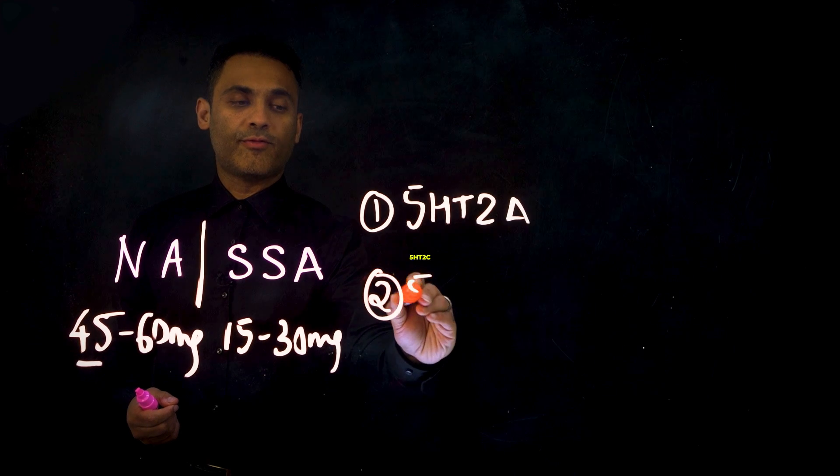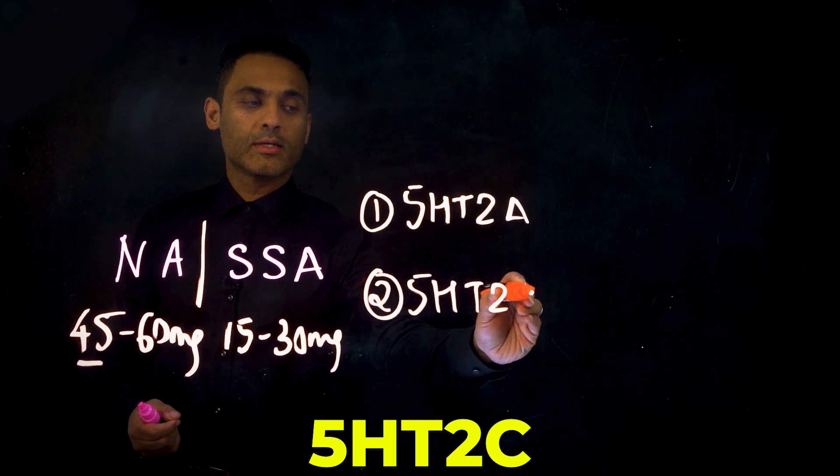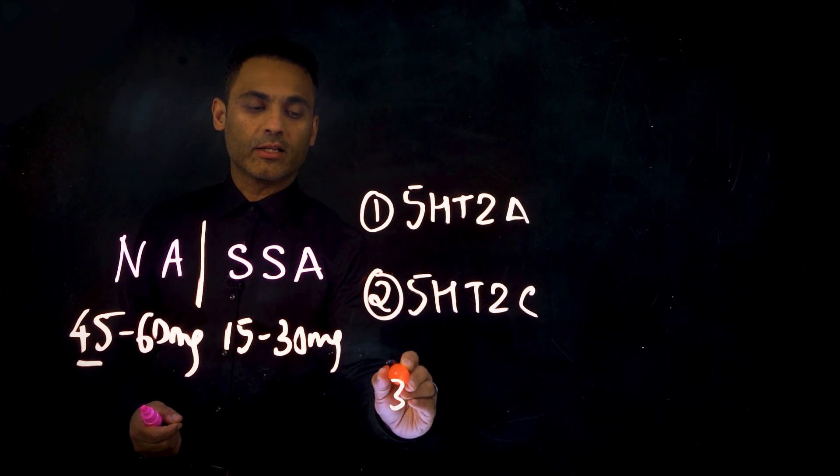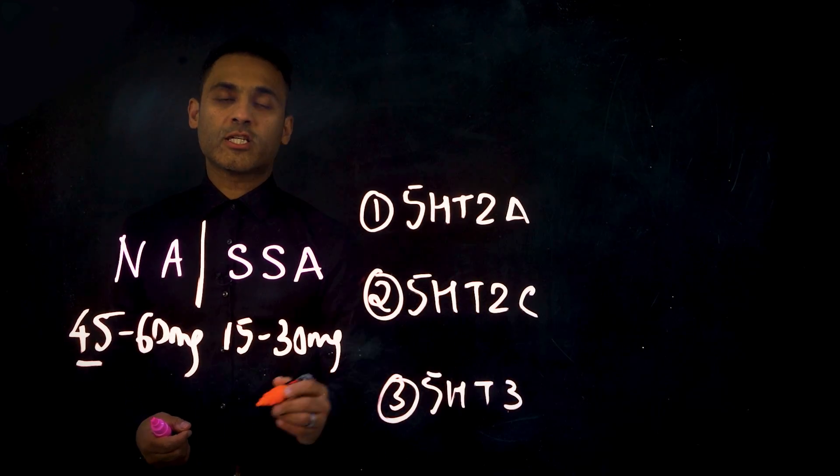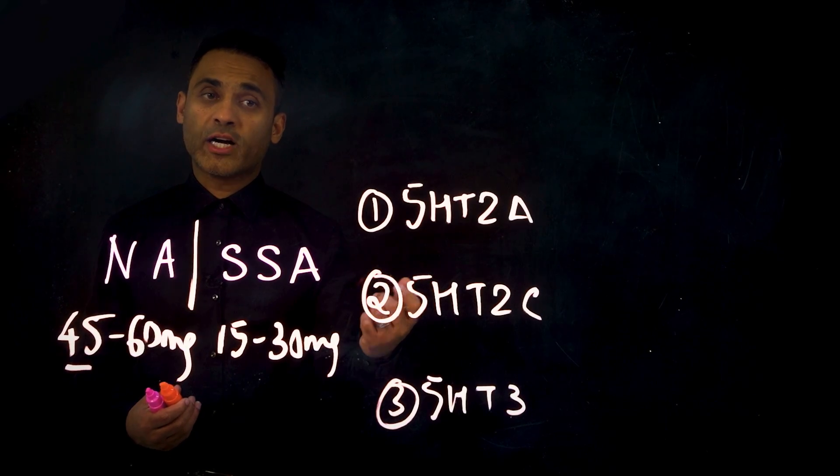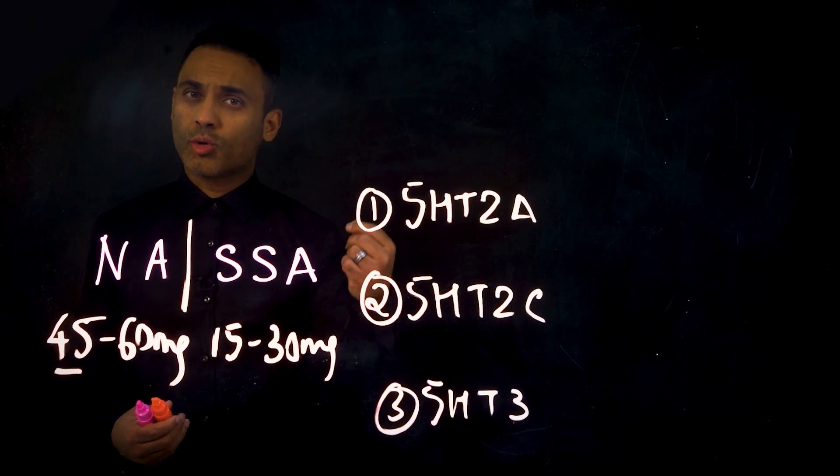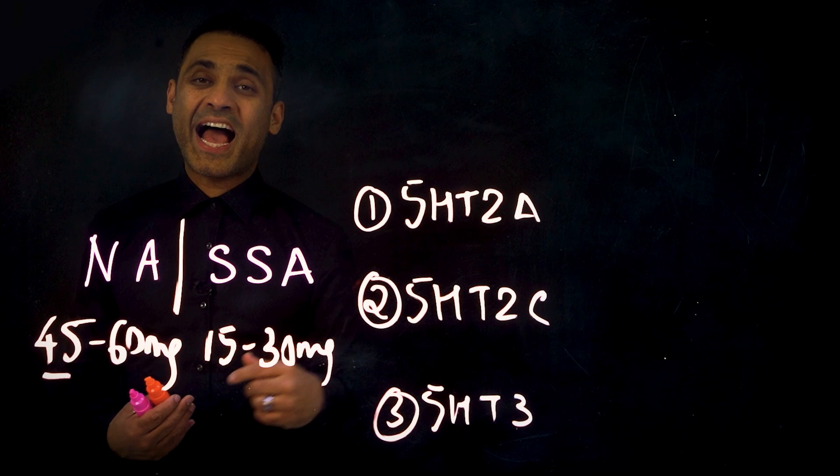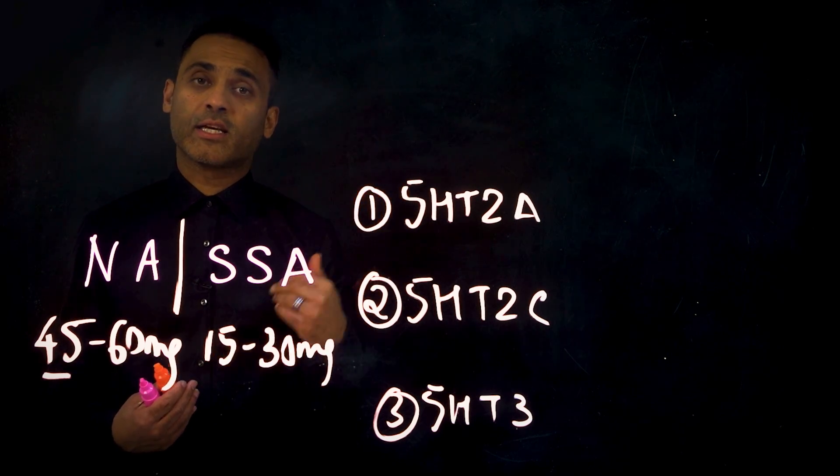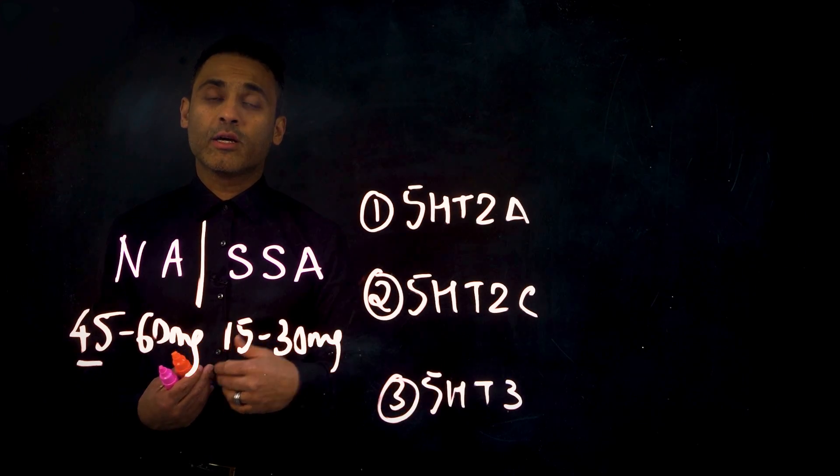Next, it antagonizes the 5-HT2C receptor. And finally, the 5-HT3 receptor. The 5-HT2C receptor mediates sexual function. 5-HT2A also to a certain extent. 5-HT2C receptor, when activated, has an anorexic effect. And 5-HT3, we know, mediates gut activity. It's present in the hypothalamus, in the nausea, vomiting area. Therefore, if that was activated,